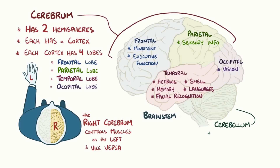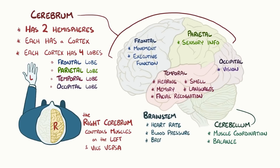The cerebellum helps with muscle coordination and balance. And finally, there is the brain stem, which plays a vital role in functions like heart rate, blood pressure, breathing, gastrointestinal function, and consciousness.